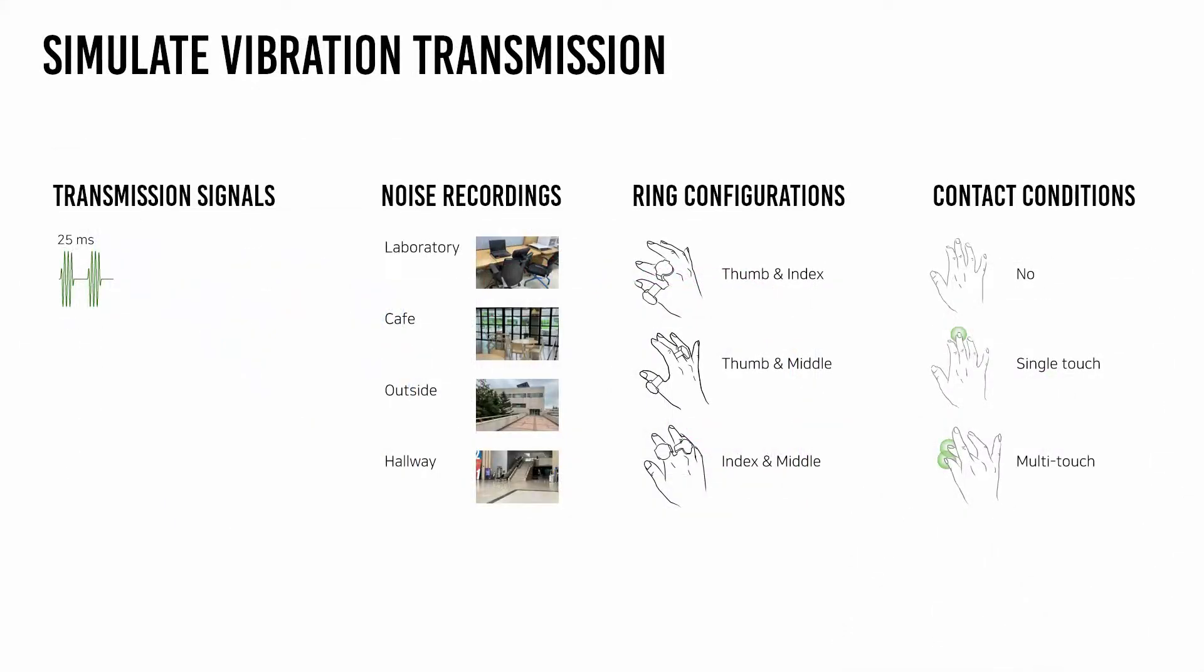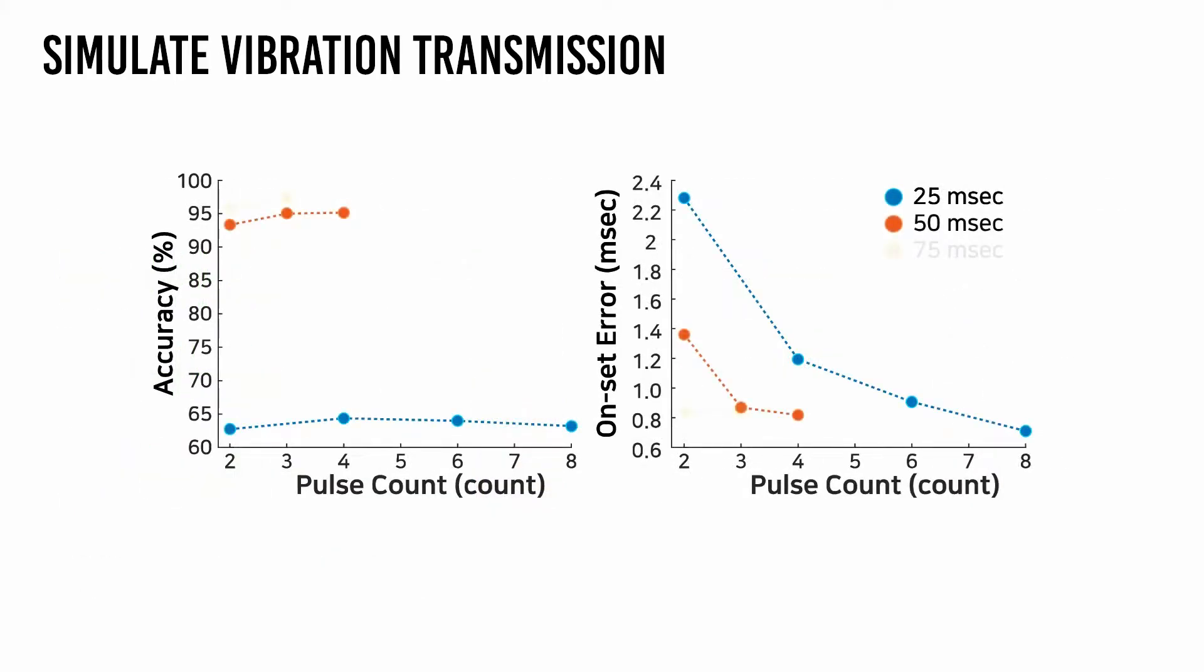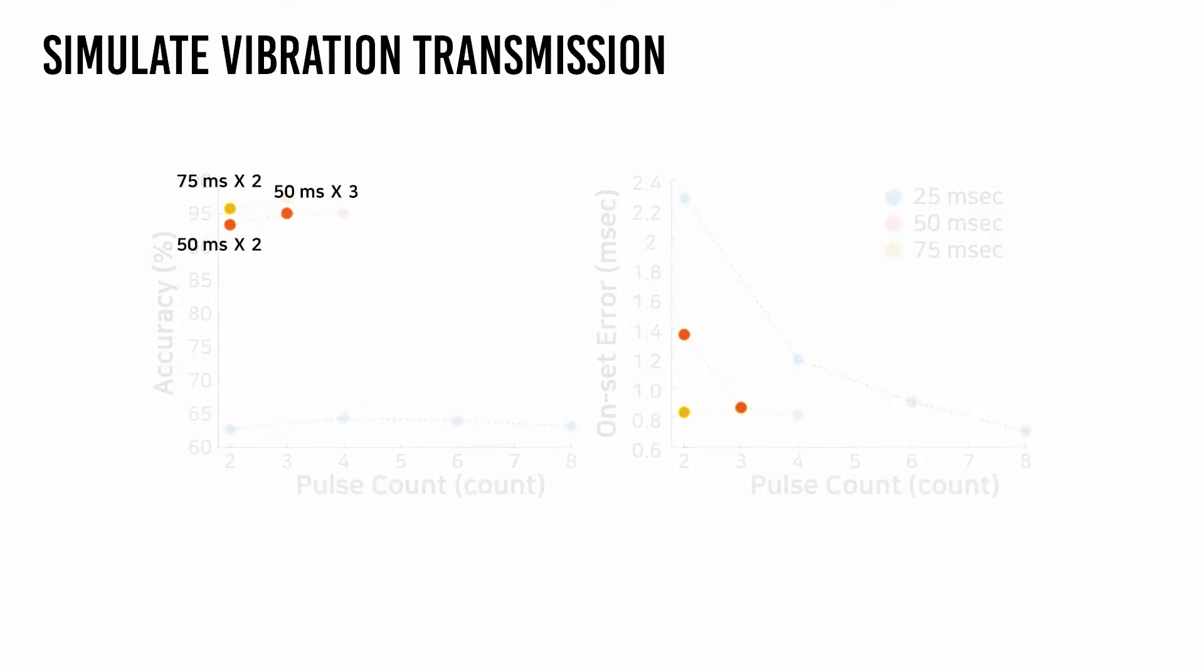Designing robust data communication takes substantial time and effort. As a systematic approach, we built a testbed to simulate the propagation of encoded vibration sequences from the transmissibility data. In this simulation, we extensively tested our modulation and demodulation methods to verify the effects of design parameters.